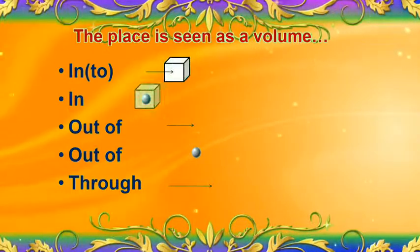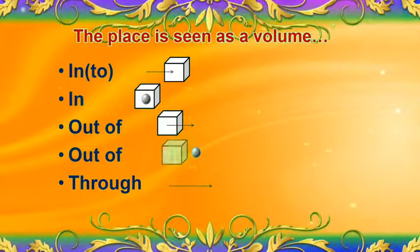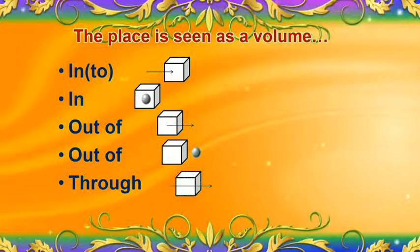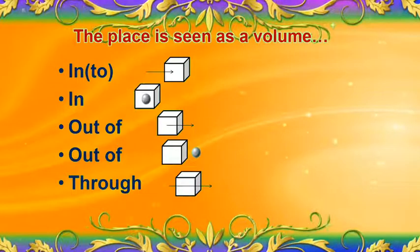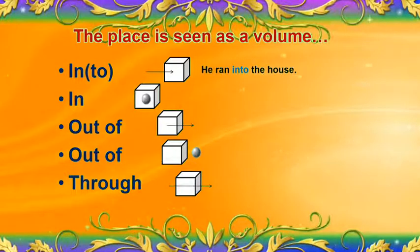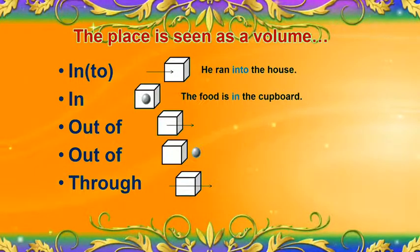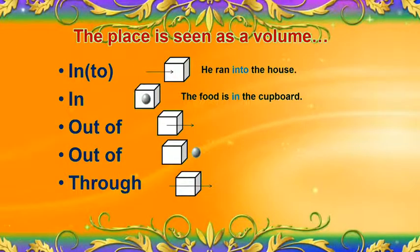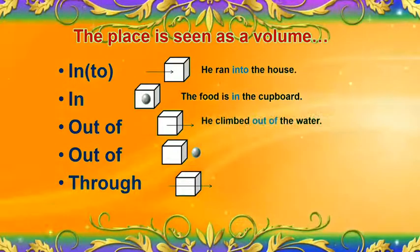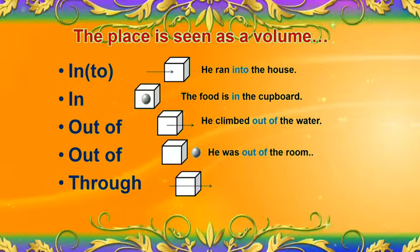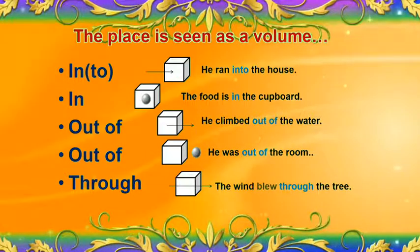If the place is seen as a volume or a rigid substance or body: 'Into': he ran into the house — here, house is a 3D object, seen as a volume. The food is in the cupboard. He climbed out of the water. He was out of the room. And 'through': the wind blew through the tree.